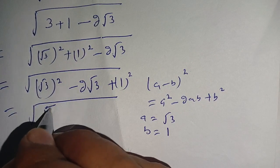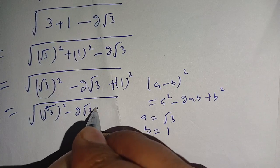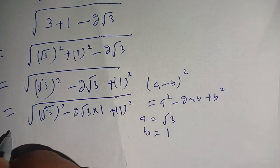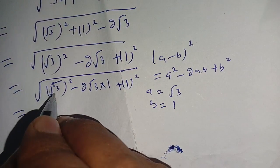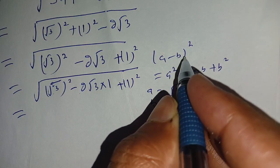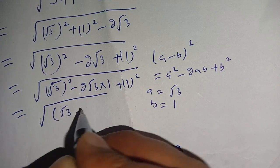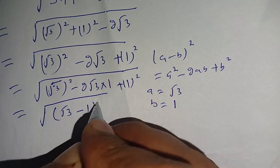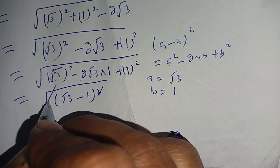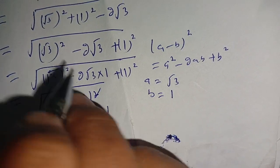We can write this as (√3)² minus 2·√3·1 plus 1², which equals a² minus 2ab plus b², and that is equal to (a minus b)², meaning (√3 minus 1)². Now we can cancel the outer square root with the square, and it is equal to square root of 3 minus 1.